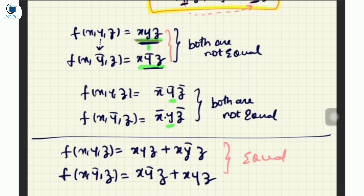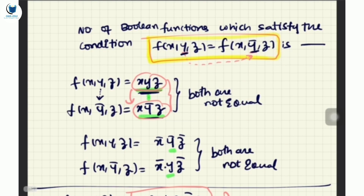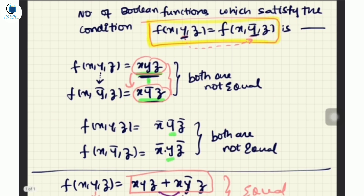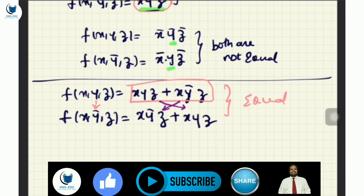What happened? I made a new function by combining two minterms. When I replace y with y_bar, the result is the same because the two terms swap — both are equal. The key insight: if you replace y with y_bar, my answer should not change.